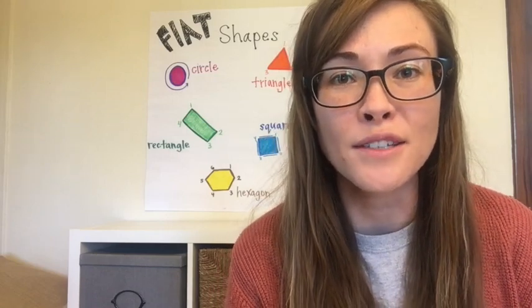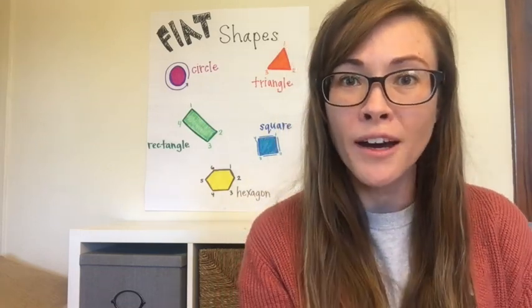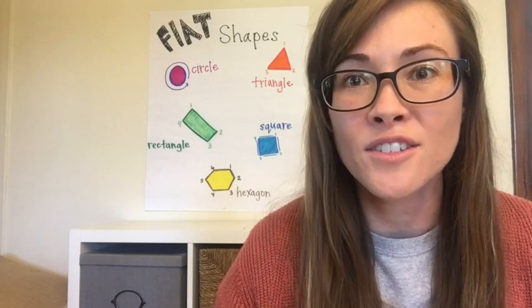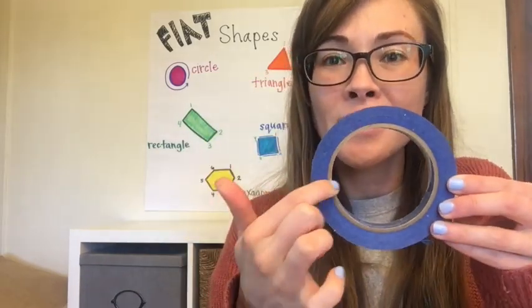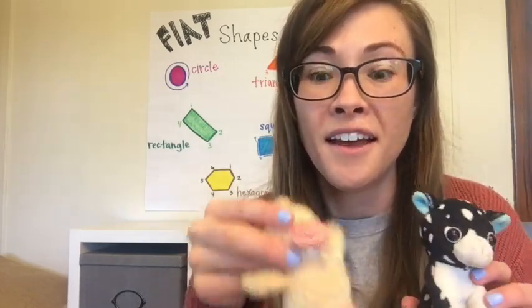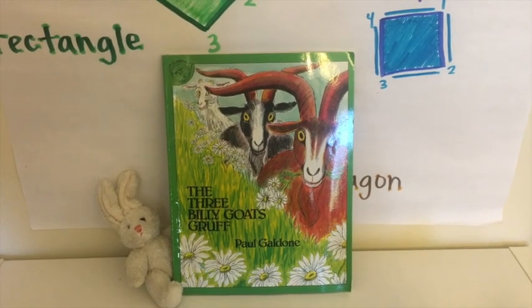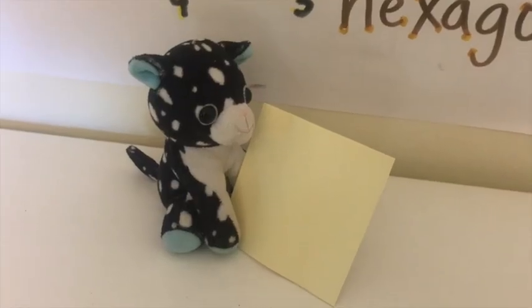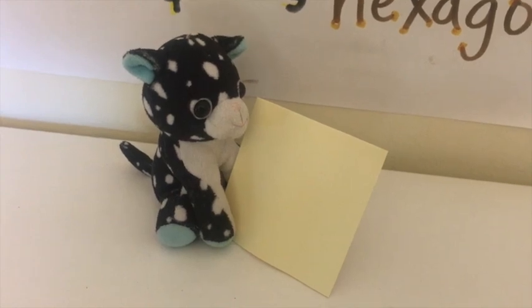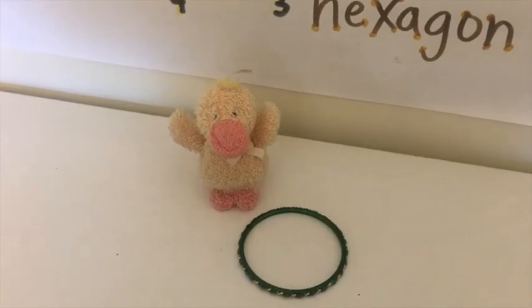The last thing we'll do together is go on a shape hunt. Do you know what a shape hunt is? We can look all around our house to see if we can find any shapes. I found some tape — this tape is the shape of a circle. Today, to help me on my shape hunt, I have three friends: Kitty, Ducky, and Bunny. Bunny found a book, which is a rectangle. Kitty found a post-it, which is a square. Ducky's bracelet is a circle.